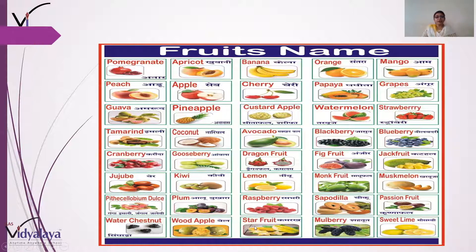Raspberry. Starfruit, yaani kamrakh. Orange, yaani santra. Papaya, yaani papita. Watermelon, yaani tarbooz. Blackberry, yaani jamun. Fig, yaani anjeer. Monk fruit, yaani sadhu phal. Sapodilla, yaani chiku. Mulberry, yaani shahtoot. Mango, yaani aam. Grapes, yaani angoor. Strawberry — isko Hindi mein bhi strawberry hi bolte hain. Blueberry, yaani neil badri. Jackfruit, yaani kathal. Musk melon, yaani kharbooza. Passion fruit, yaani krishnaaphal. Sweet lime, yaani mosambi.